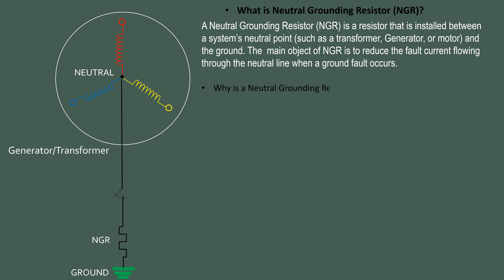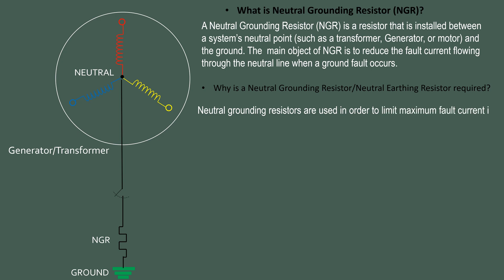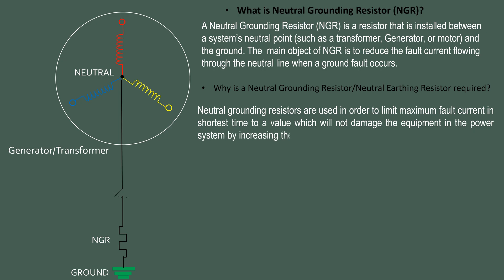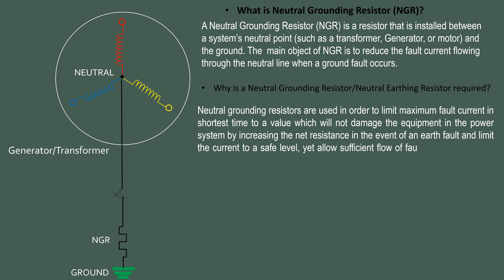Why is a Neutral Grounding Resistor or Neutral Earthing Resistor required? Neutral Grounding Resistors are used in order to limit maximum fault current in the shortest time to a value which will not damage equipment in the power system, by increasing the net resistance in the event of an earth fault and limiting the current to a safe level. It allows sufficient flow of fault current to operate protective relays to clear the fault by issuing a tripping command to the respective circuit breakers.